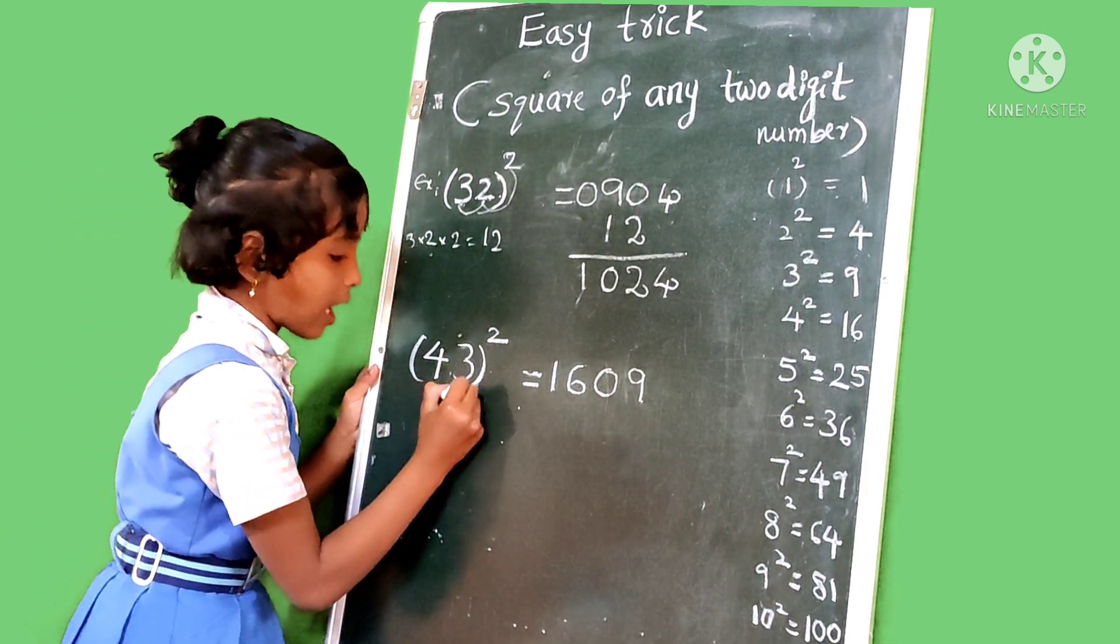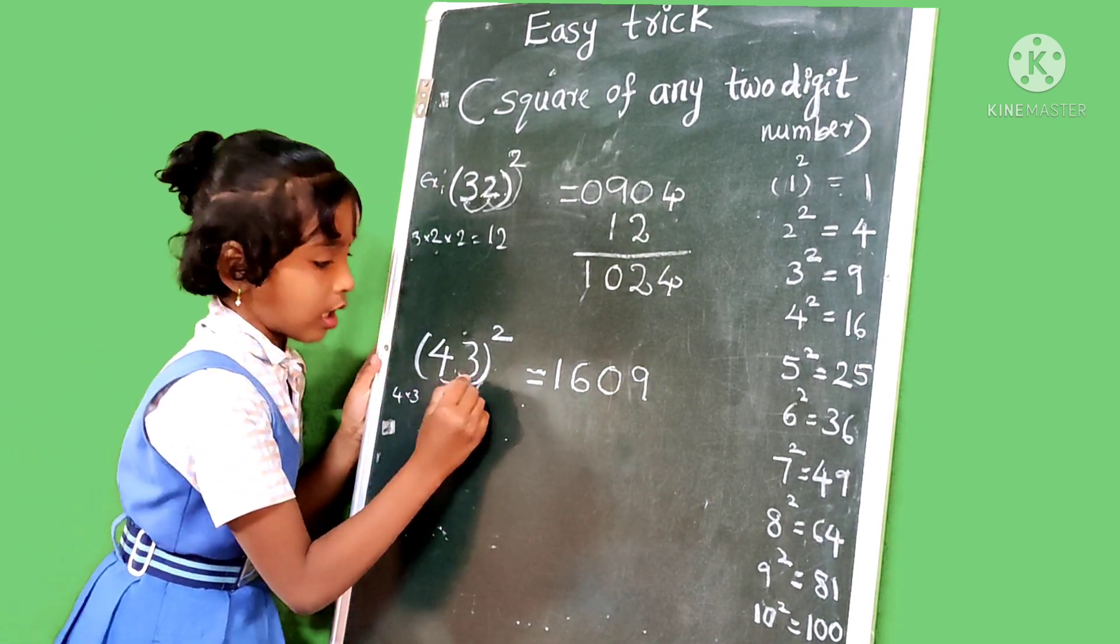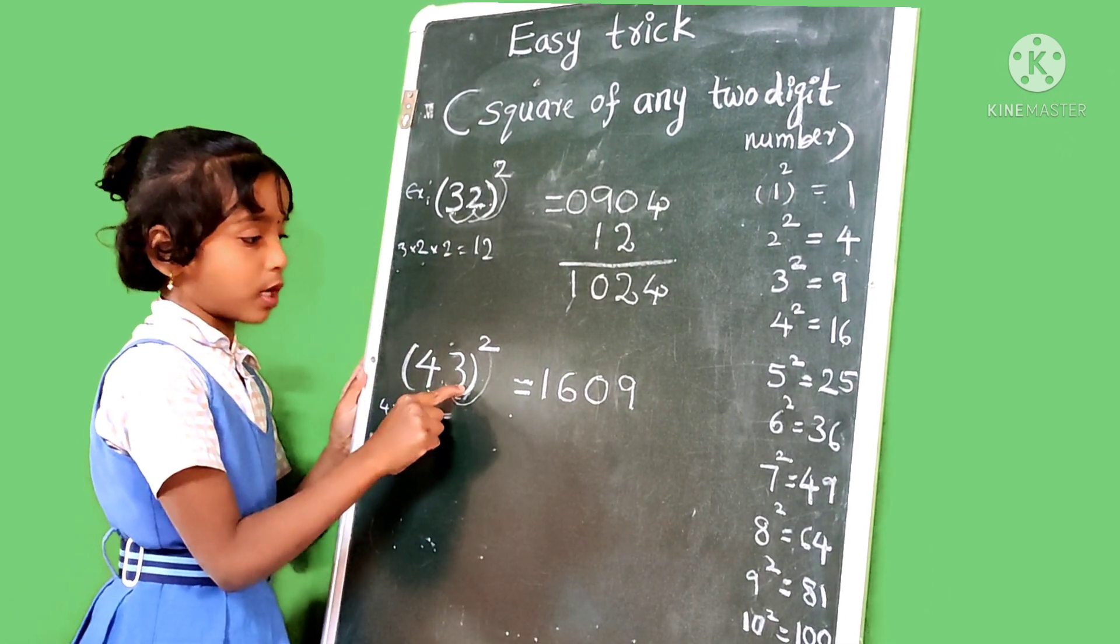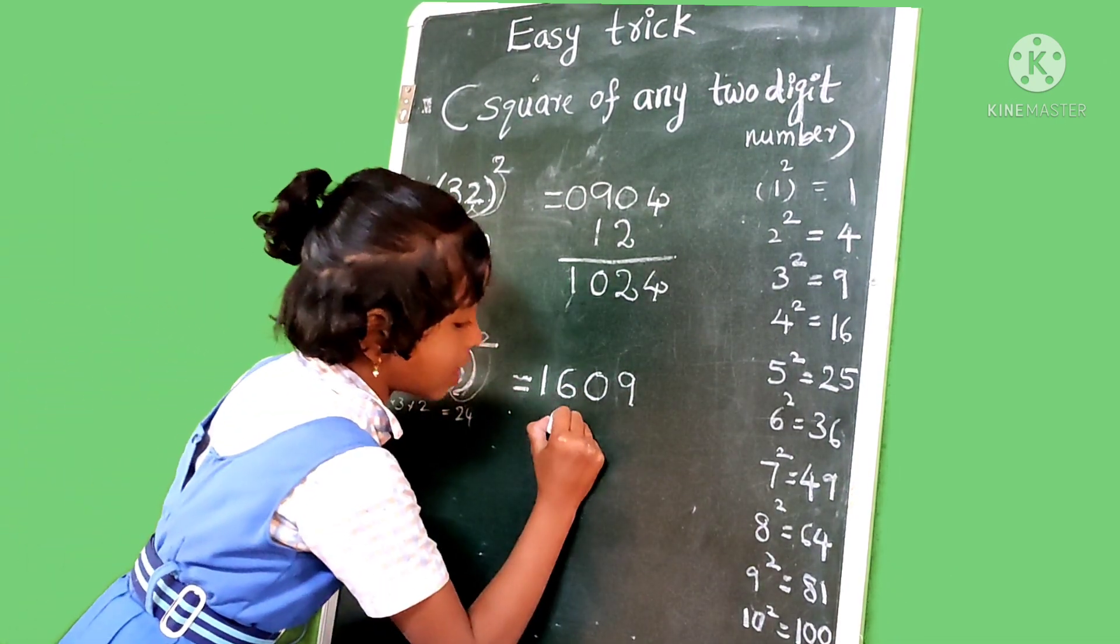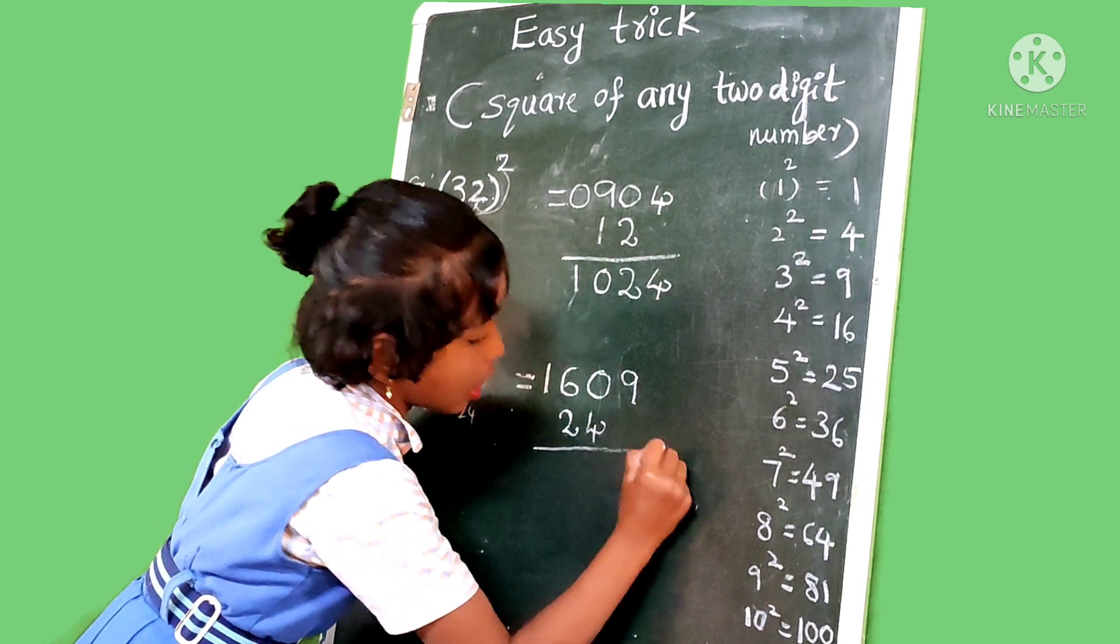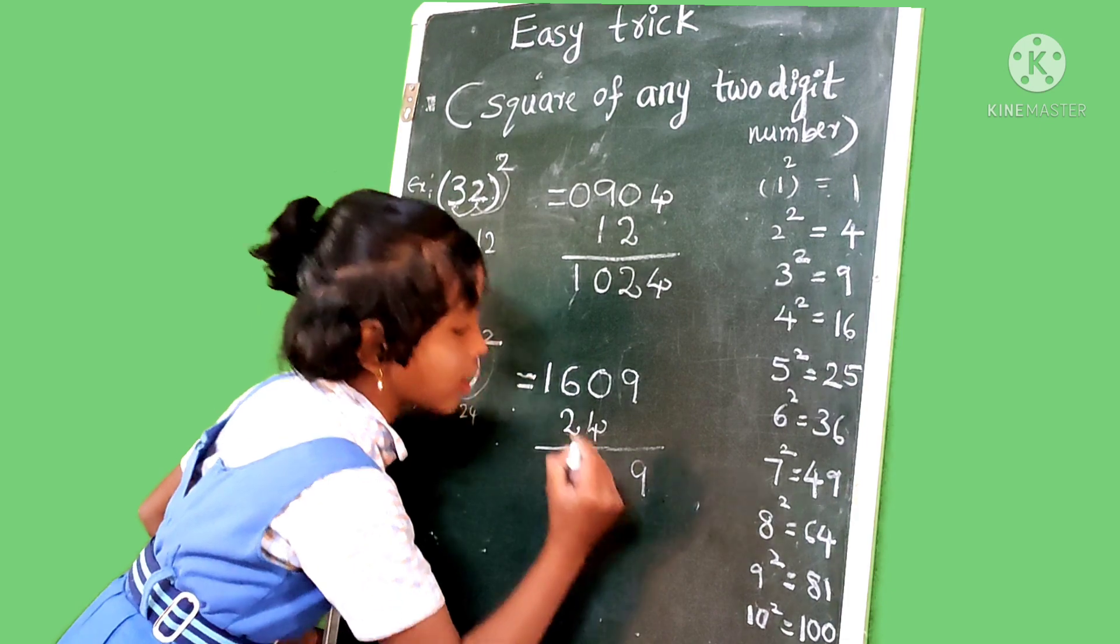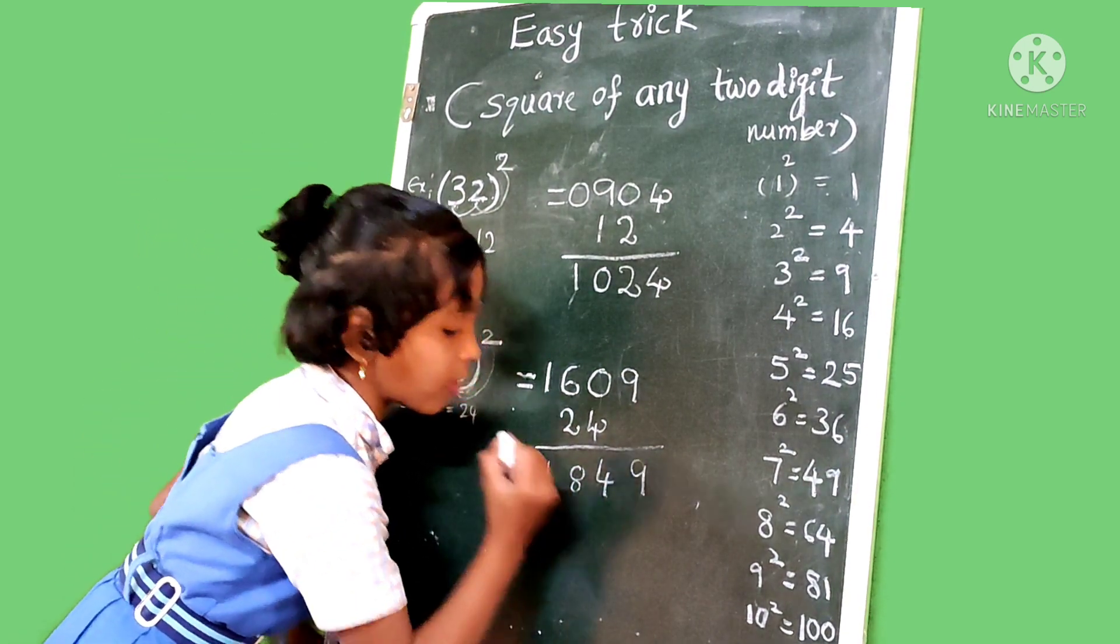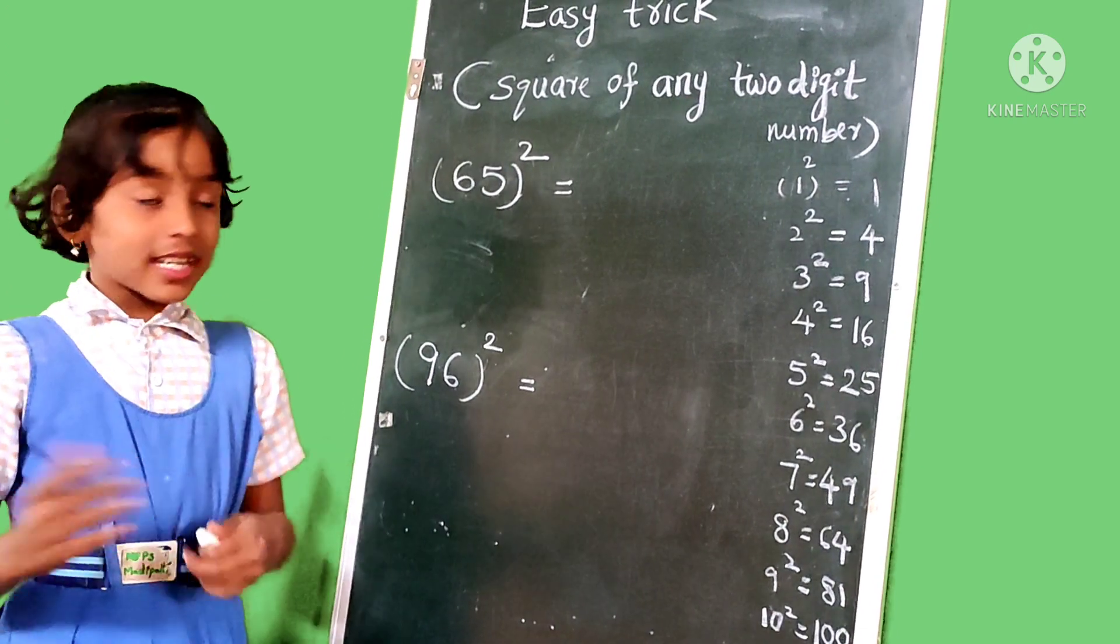Then we multiply, and next we multiply 4 and 3, and 2, and 2. So 4 times 3 is 12, and 12 times 2 is 24. Then we leave units place and we write 24. And we add these numbers. 9, 0 plus 4 is 4, 6 plus 2 is 8, and 1 as this, 1. So 43 squared is 1849.